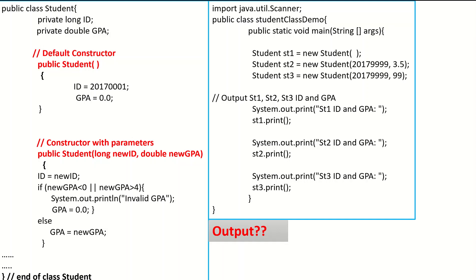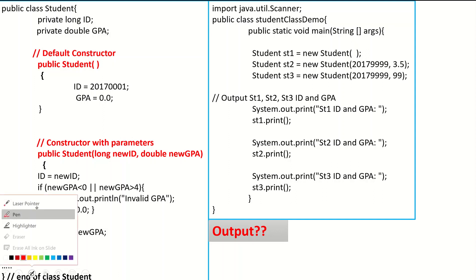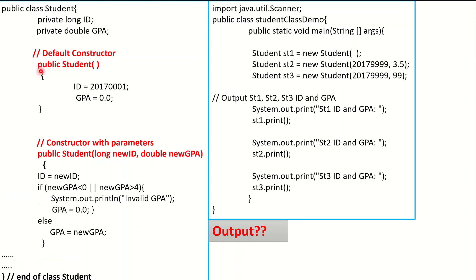A constructor can be written in two ways. I can have a constructor that is the default one. It should always be public. It should always have exactly the same name as the class. So if the class is called Student, the constructor should be called Student. And there should be no return type — so it's not valid to say public void Student. Always we just say public Student. If you have the brackets empty, this is the default constructor — an empty constructor with no parameters. And we will initialize ID to 2017001 and GPA to zero.